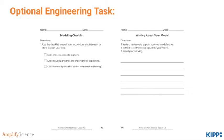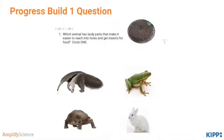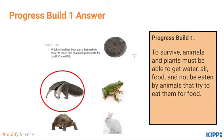On to the end of unit assessment. The first question assesses Progress Build 1 — pause and complete the question. You should have picked the anteater. Students should notice that its long snout, long tongue, and digging claws allow it to reach into holes and get insects for food. None of the other animals have body parts that would enable that.